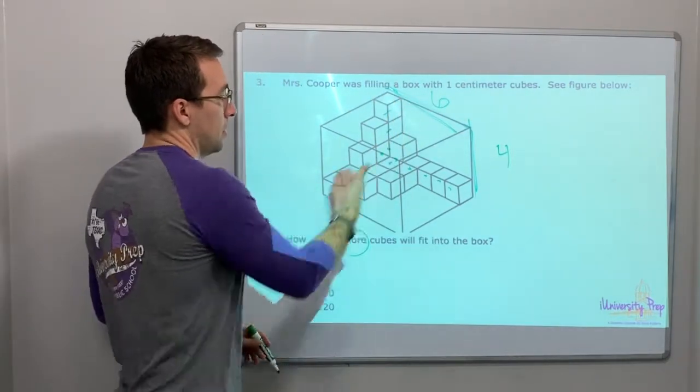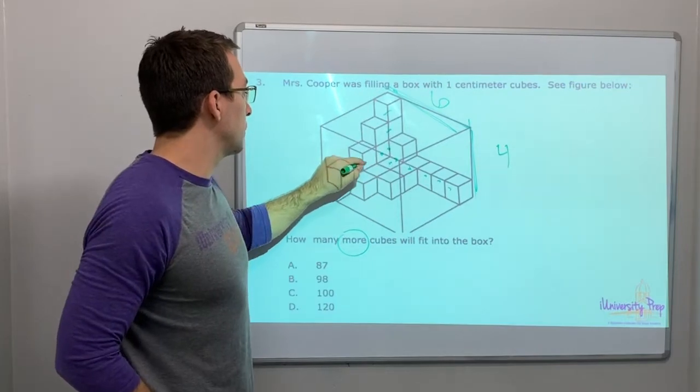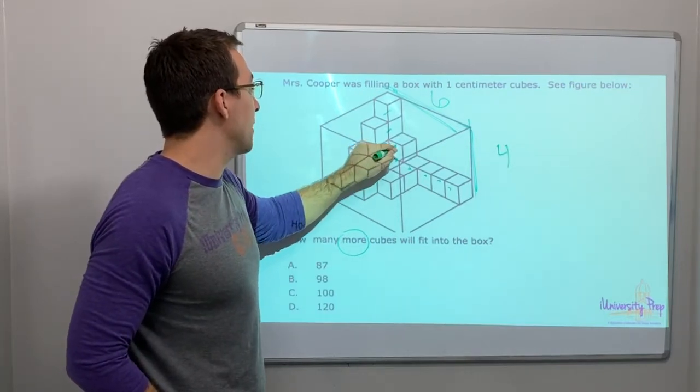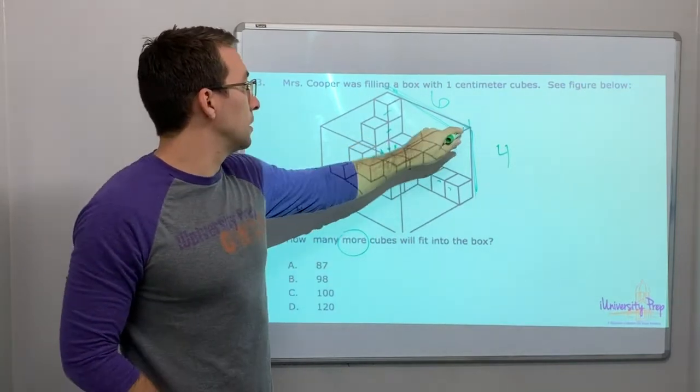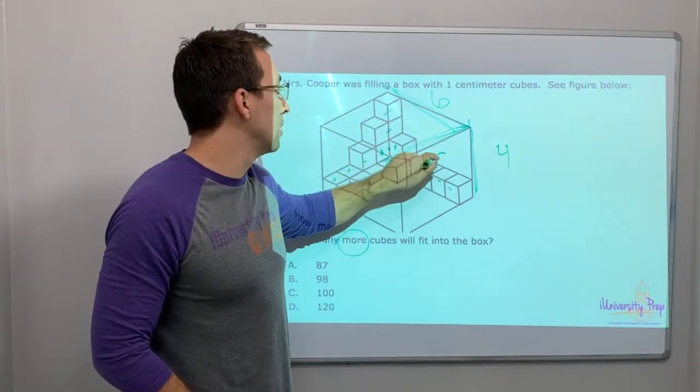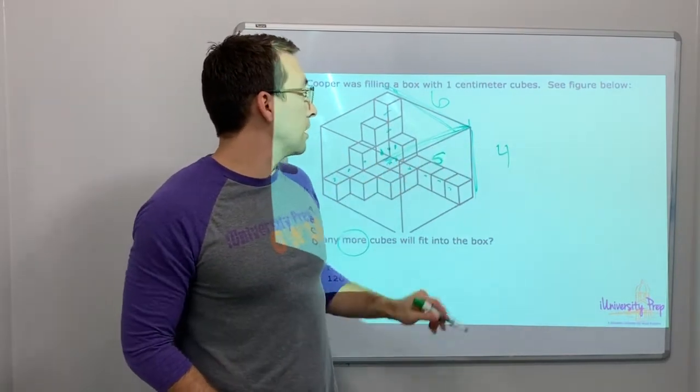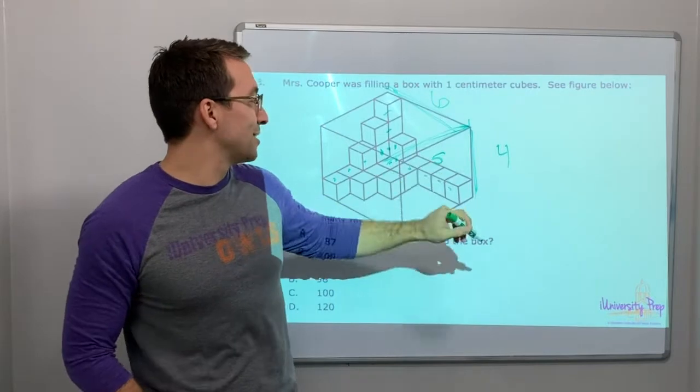And then how many right here? One, two, three, four, five. And then it's five across. So five times four times six. Or five times four times six.